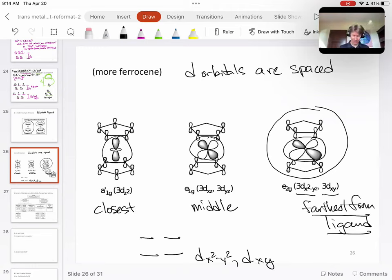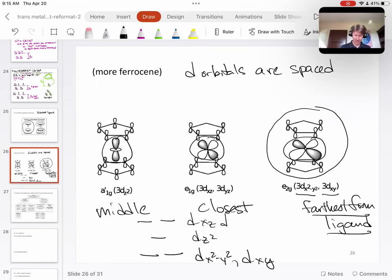I have these backwards, that's the problem. I was like wait a minute, I said they were hard to determine, but it's true, turns out that this is the middle, and these are the closest, and so my next level is going to be dz squared, and then above that is going to be dxz and dyz.